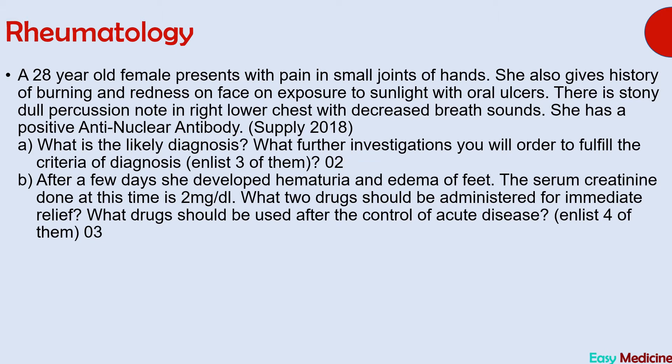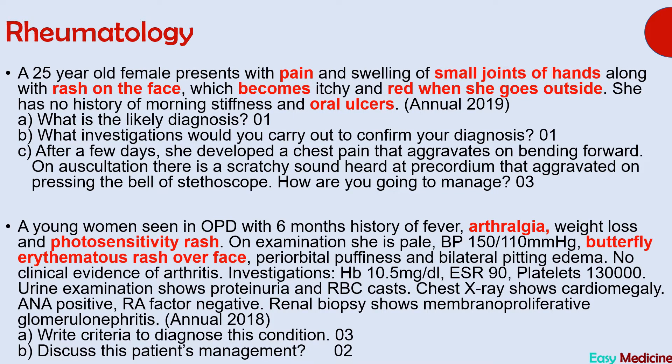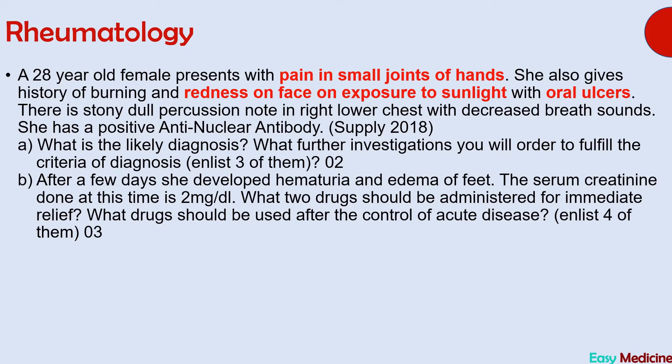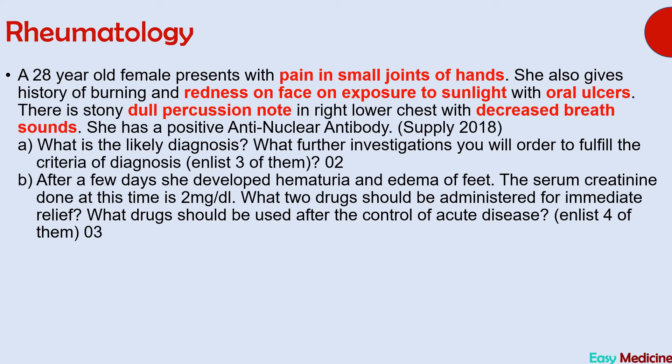The points which can lead you to the diagnosis of SLE are: a butterfly-shaped facial rash that worsens with sunlight — this is called a photosensitive rash — pain involving small hand joints, and oral ulcers. Since SLE is a multi-system disease, kidney involvement results in periorbital puffiness, bilateral pitting edema, proteinuria, and RBC casts. Involvement of the pleura results in dull percussion note and decreased unilateral breath sounds.